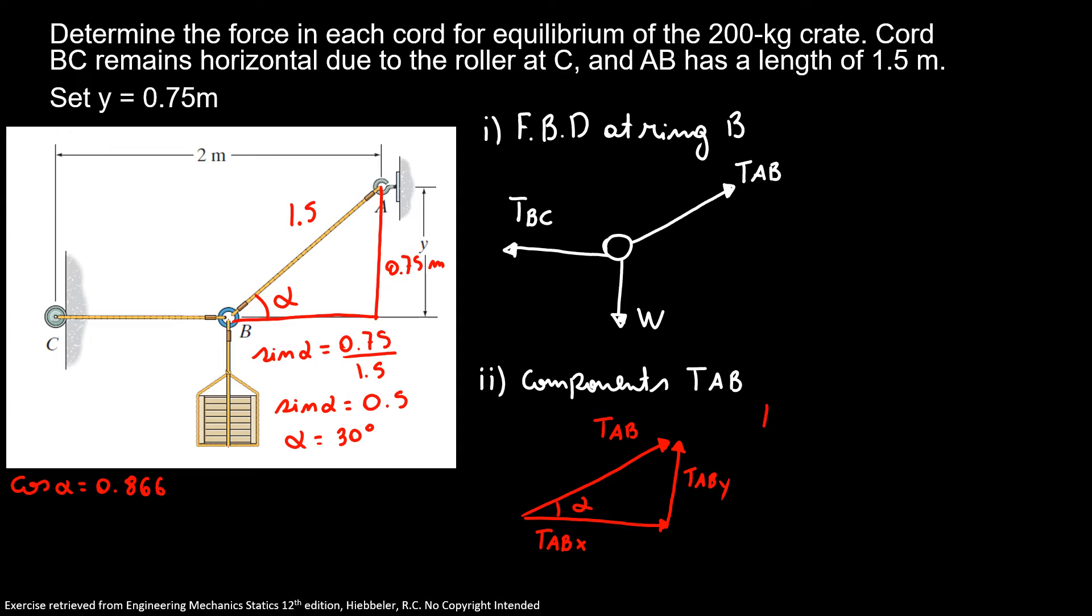So my tension AB in Y equals my tension AB times my sine of alpha. So my tension AB in Y direction is 0.5 times my tension AB. And my tension AB in the X direction is tension AB times cosine of alpha. So my tension AB in X component is 0.866 times my tension AB.